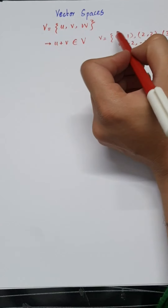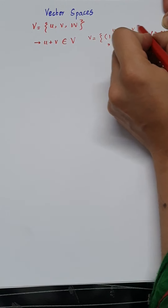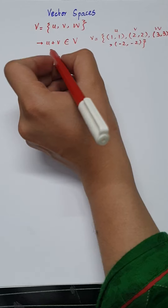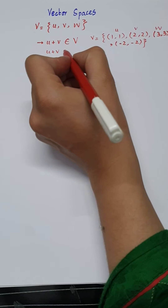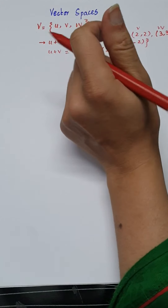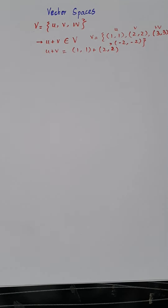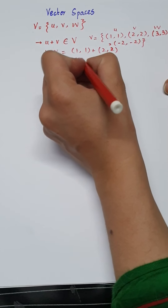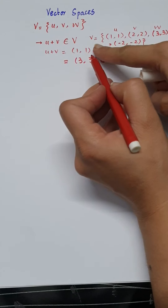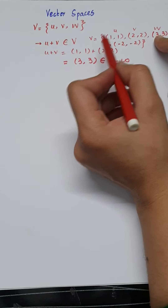Let's say (1,1) is U, (2,2) is V, and (3,3) is W. If I add U plus V, that means (1,1) plus (2,2), the resultant is (3,3), which also belongs to the set V — it equals W. So the first property is satisfied.